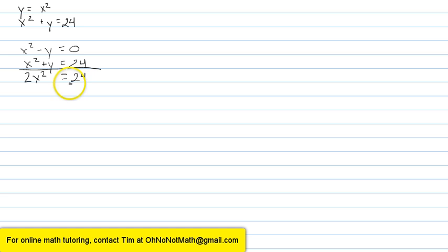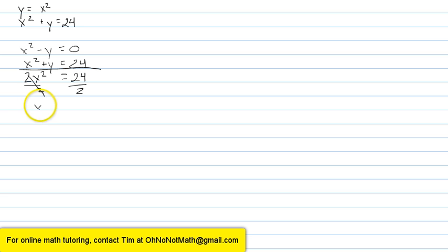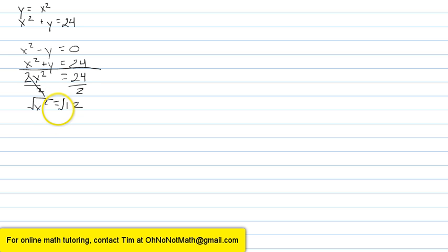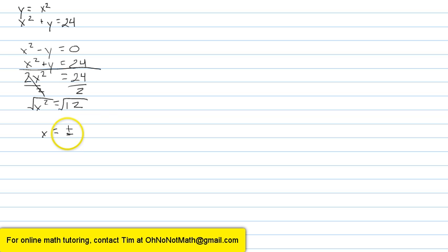I want to solve this for x. So I divide both sides of the equation by 2. These 2's cancel. I get x squared equals 12. Now I take the square root of both sides, and I have x equals plus or minus the square root of 12.